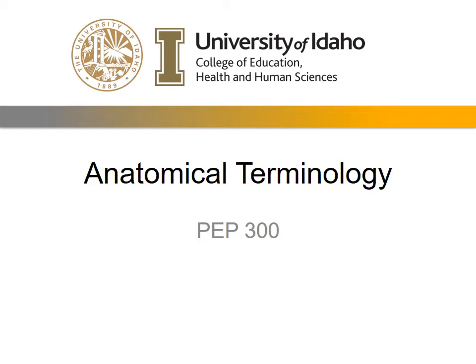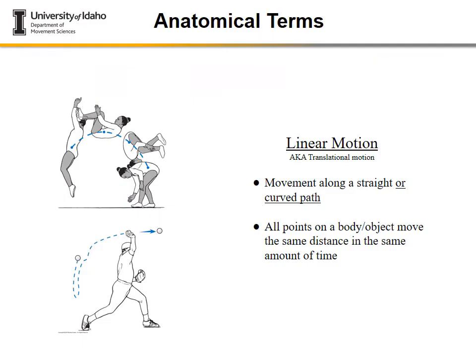Going forward we're going to talk about the basic anatomical terminology for section one, or module one, of this class. This terminology is going to be important especially when we get to the kinematic component of the class in module two, where we're going to describe human motion in space. This terminology is essential so that we're all on the same page when we talk to each other.